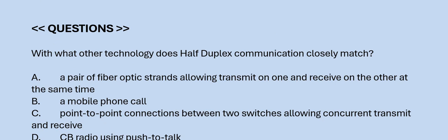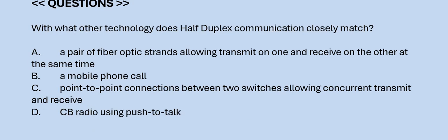Next question: With what other technology does half-duplex most correctly match? Option A: a pair of fiber optic strands allowing transmit on one and receive on the other at the same time. Option B: a mobile phone call. Option C: point-to-point connections between two switches allowing concurrent transmit and receive. Option D: a CB radio using push-to-talk. The correct answer is Option D.